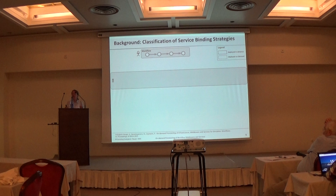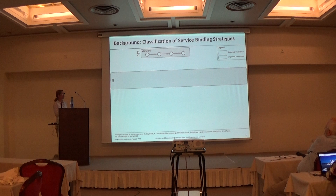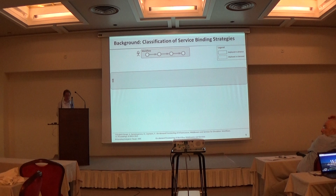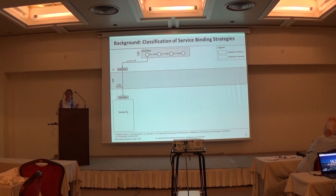As an underpinning for our concept of on-demand provisioning, we introduce an extended classification for service binding strategies. In the upper part you see an example workflow, and in the middle you see an enterprise service bus — a component which is able to realize different service binding strategies. The first strategy is called static binding. In this strategy, the service call already contains the endpoint of the service, and the ESB only forwards the service call to this endpoint.